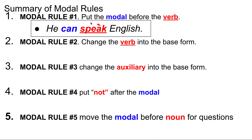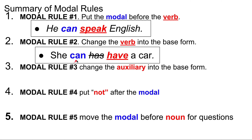Modal rule number two: change the verb into the base form. For example, 'she can have a car.' Originally we would write 'she has a car' — we use 'has' because it's third person singular, agreeing with 'she.' But when I add the modal 'can,' I change 'has' into the base form 'have': 'she can have a car.'